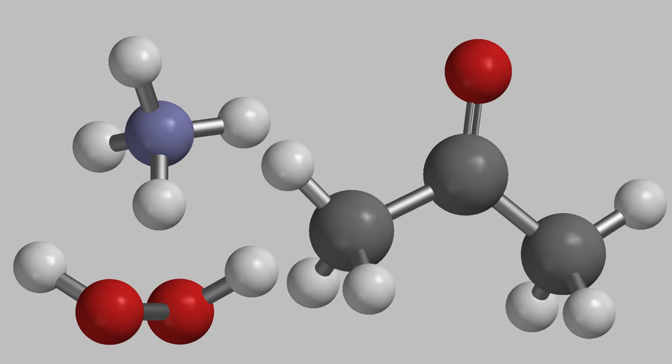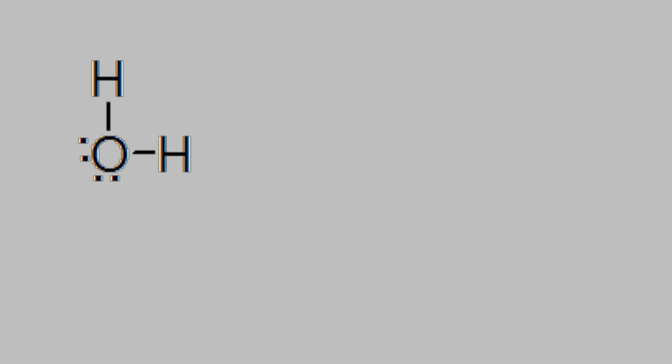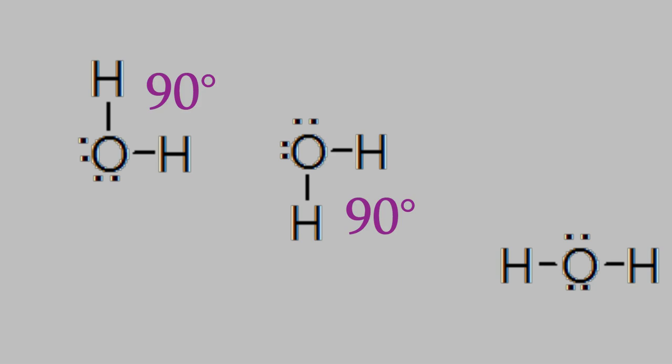To start, let's remember what we know about Lewis dot structures. Here's the Lewis structure for water. You might remember that we can draw the two hydrogens on any two sides of the oxygen. Depending on which sides we choose, the hydrogens look like they're either at a 90-degree angle or on opposite sides of the molecule.